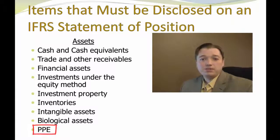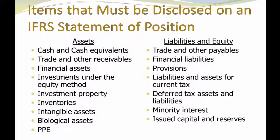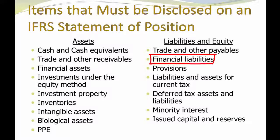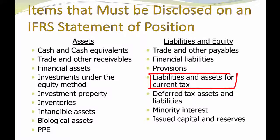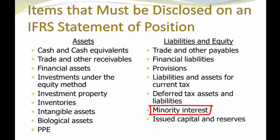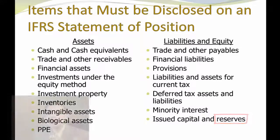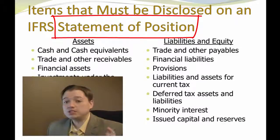For liabilities and equity, there's another list of things we have to include: basically accounts payable and other things we owe, financial liabilities such as bonds or other notes, and provisions — which are estimates for things we're going to owe in the future, like a warranty where customers can bring things back. Current and deferred tax assets and liabilities all have to be listed out separately. Minority interest — if I own a subsidiary but not all of it, somebody else owns the rest and I have to show that. And finally, issued capital — that's common stock — and then reserves. These items show up in an IFRS statement of position, not a balance sheet, but same idea, just different name. The order you put them in, though, that's up to you, and some of this can be disclosed in the footnotes.